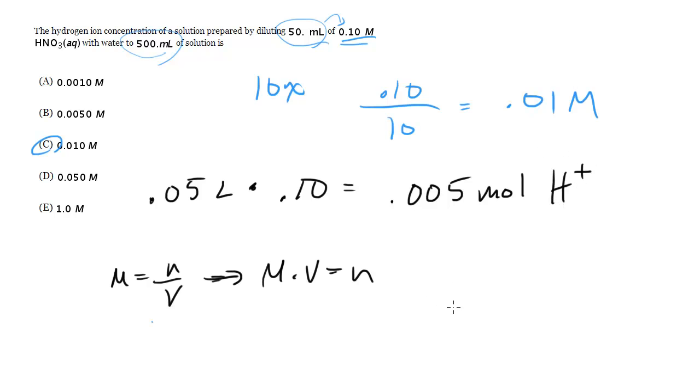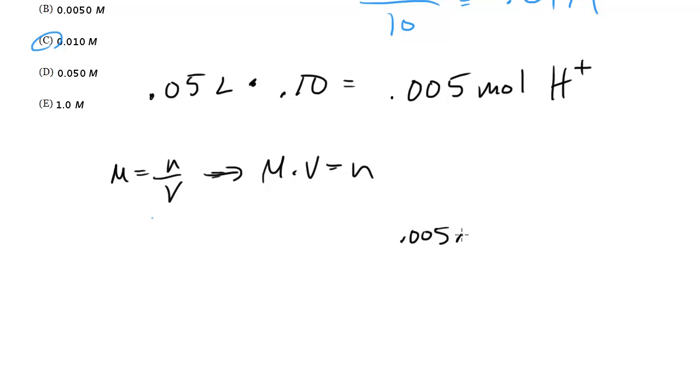And now we just take that and we divide it by the new volume, which is 0.5 liters. It's 500 mL, which we make 0.5 liters. And we do that and we pretty much double the top because we're dividing it by half. So this becomes again 0.01 molar, which is what we had before.